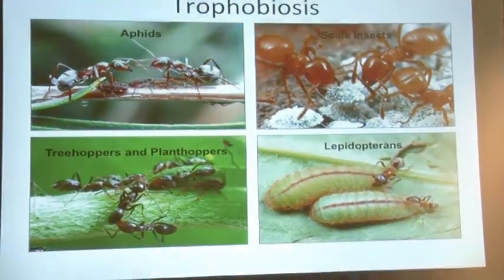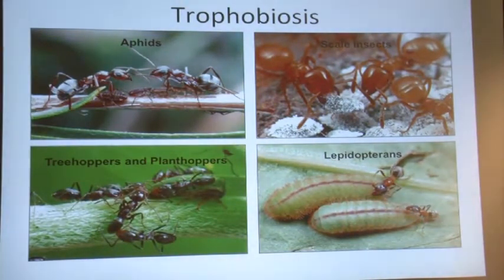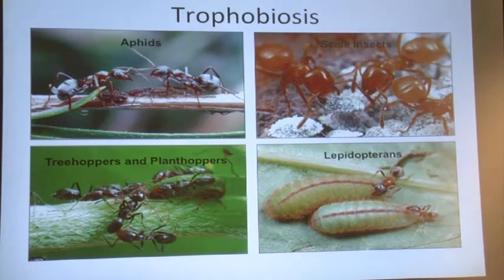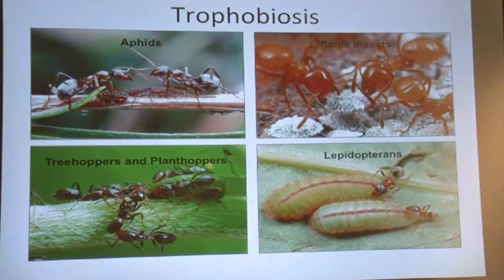Getting into the branch of ant agriculture I'm particularly interested in: relationships called trophobioses. These are associations between ants and other insects — mainly an order called Hemiptera — where the ants provide services in exchange for a food reward called honeydew. Examples of Hemiptera include aphids, tree hoppers, plant hoppers, and scale insects. Scale insects are the ones I specialize on — you may know them from attacking your garden or your cactus.